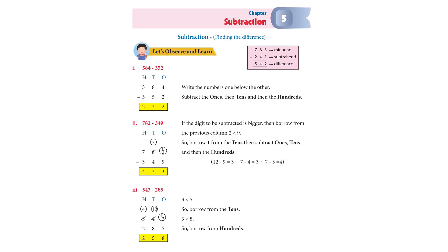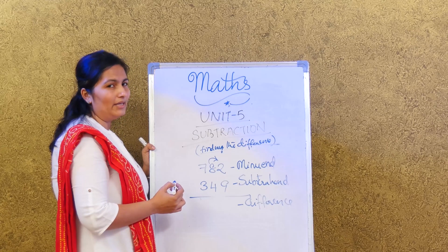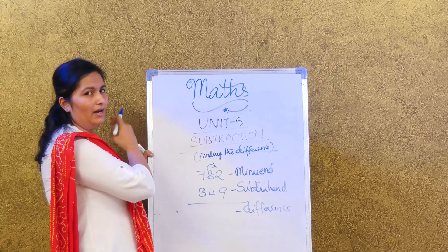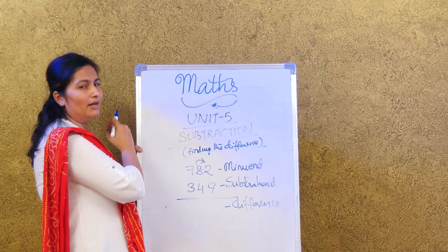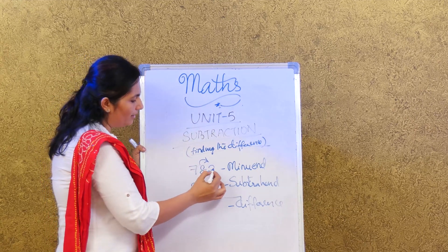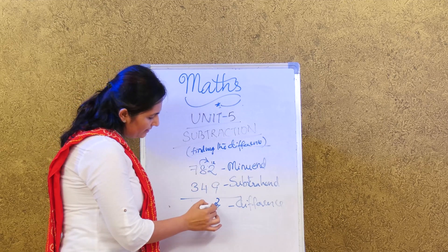Let us look at the next sum in page number 86: 782 minus 349. We start the system of borrowing. In addition it was carry forward to the other side, but now it is borrowing. So we are going to take 1 and this is going to be considered as 12. 12 minus 9 is 3.